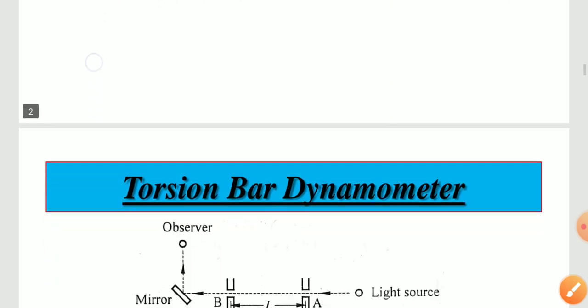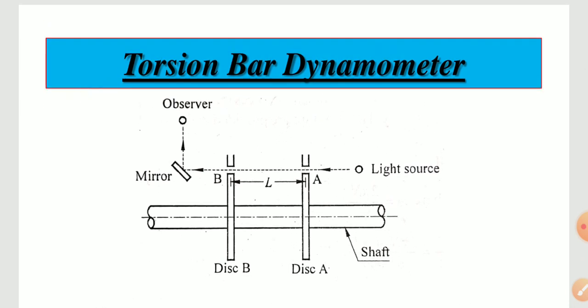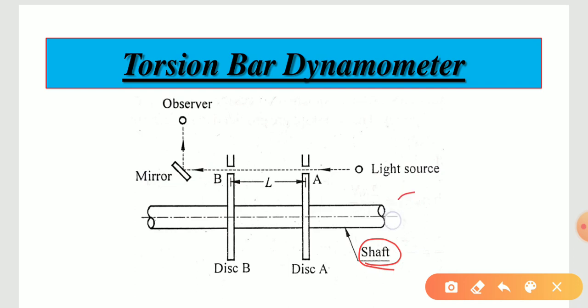Now we will discuss about the torsion bar dynamometer. The torque of a rotating element can be measured based on the rigidity of the rotating element or elastic deflection. In this type of dynamometer, the torque of a rotating element such as a shaft can be measured by measuring the angle of twist of the shaft.